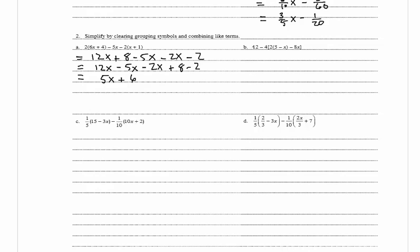In B we have 12 minus 4 times (2 times (5 minus x) minus 8x). First we distribute the 2 times (5 minus x): 2 times 5 is 10, minus 2 times x is 2x. So we have 12 minus 4 times (10 minus 2x minus 8x). Combining like terms inside the parentheses: negative 2x and negative 8x gives negative 10x.